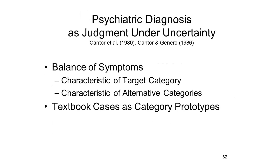So, regardless of diagnostic category, there is no longer any expectation that all of the symptoms listed as characteristic of a syndrome will be present in any particular case. What this means is that diagnosis is very much a matter of judgment under uncertainty. There is no longer any algorithm, no longer any list of singly necessary and jointly sufficient defining symptoms that will allow the professional to solve the problem of assigning the correct diagnosis. Textbook cases serve more as category prototypes than lists of defining features, and there is an explicit recognition of the heterogeneity among actual patients all carrying a particular diagnosis.